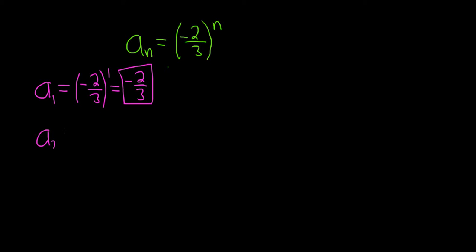For a_2, we simply replace all of the n's with 2's. So we have negative 2 thirds squared. This means that you square each piece. You square the negative 2, and you square the 3. Negative 2 squared is 4, and 3 squared is 9. So we get 4 ninths.